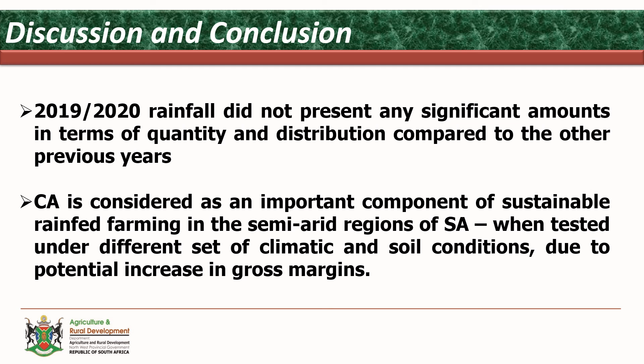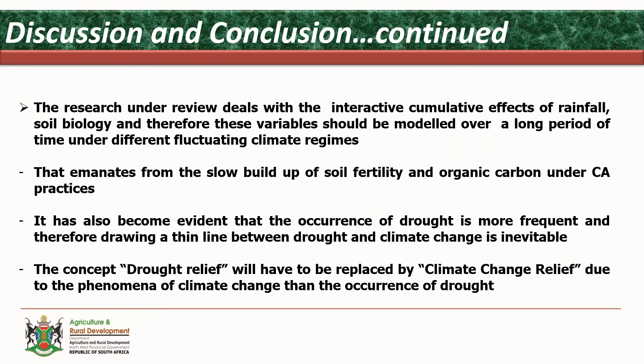In terms of discussion and conclusion, this is a research which is a work in progress and lots have to be learned. The 2019–2020 rainfall didn't present any significant amount in terms of quantity and distribution compared to other years. Conservation agriculture is an important component of sustainable rainfed farming in South Africa when tested under different soil and climatic conditions, due to its potential increase in gross margin. The research deals with the interactive cumulative effects of rainfall and soil biology, and therefore it will only make sense when all variables are measured over a long period of time due to unreliable weather conditions and fluctuating climates.